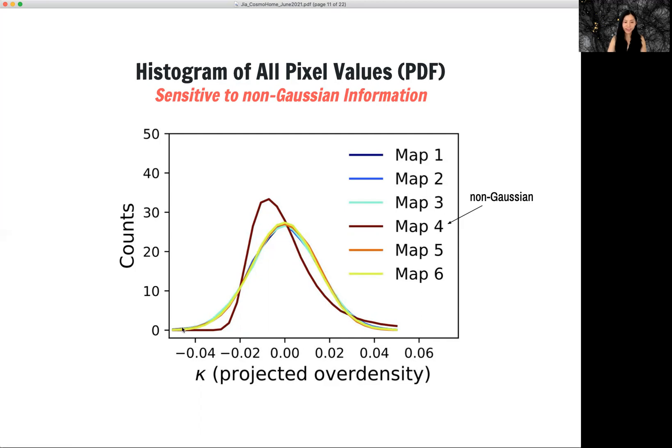And map four, the non-Gaussian map from simulation is skilled with a high Kappa tail. So indeed, there's a lot of information beyond the power spectrum.